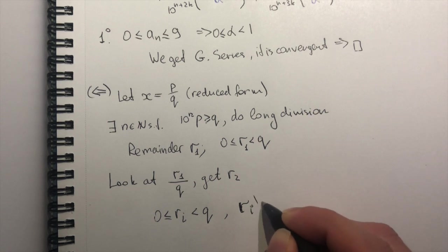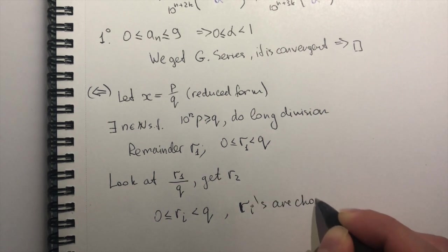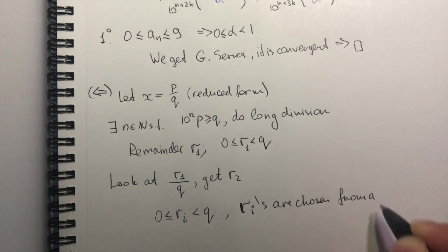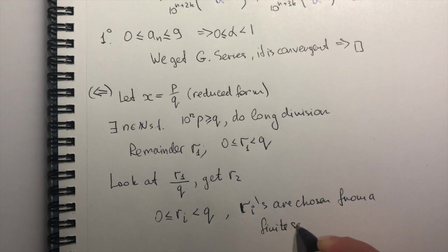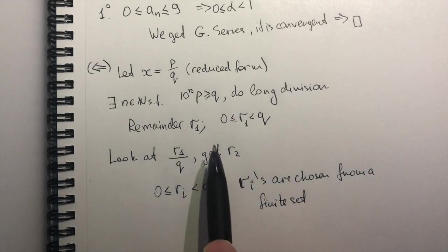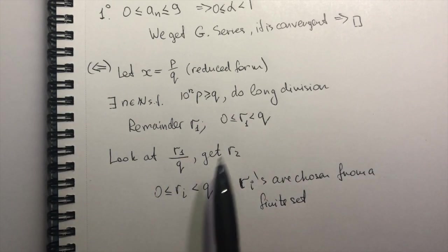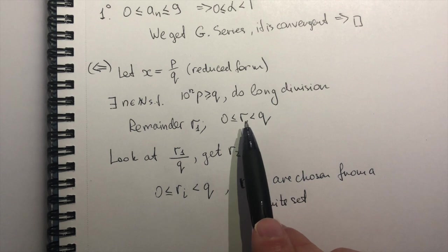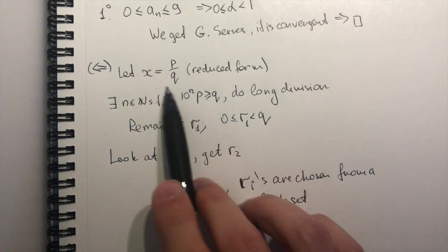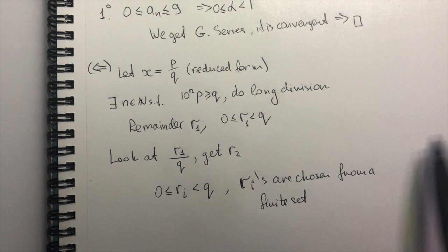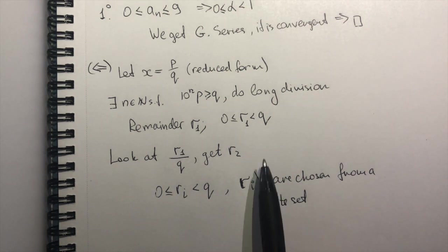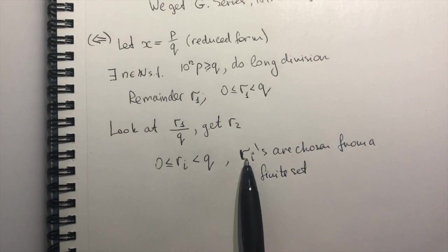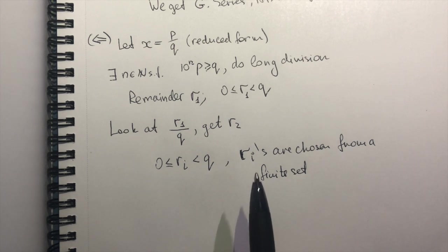Our remainders are chosen from a finite set. So that means that if I continue this procedure long enough, I will either get zero, at which point I will realize that my expansion is finite, so it will certainly be preperiodic, or I will do this for as long as I can. But if I do it at least q times, I will have to repeat one of the remainders. One of the remainders will have to appear twice.